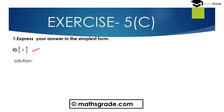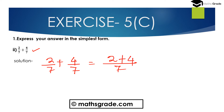Question number 2: 2 divided by 7 plus 4 divided by 7. Here both have equal denominator, so both are like fractions. When we add like fractions, just add the numerators divided by the common denominator. The common denominator is 7. Add the numerators: 2 plus 4 is 6, divided by 7. And 6 divided by 7 is in the simplest form, so 2 divided by 7 plus 4 divided by 7 equals 6 divided by 7.